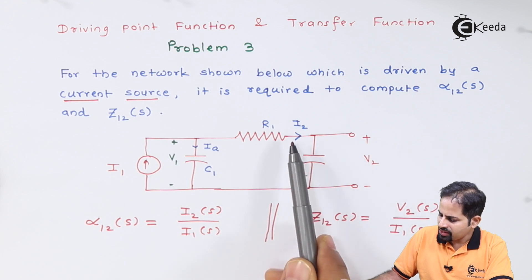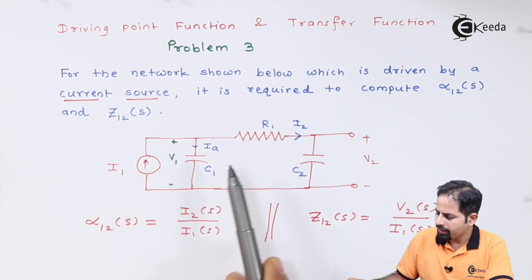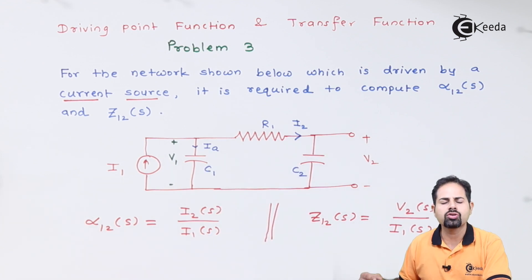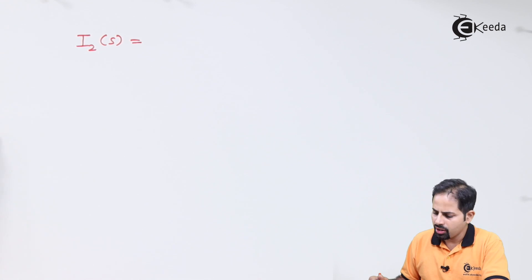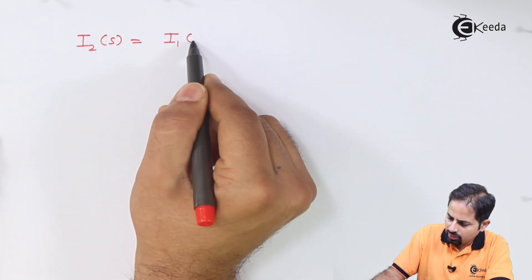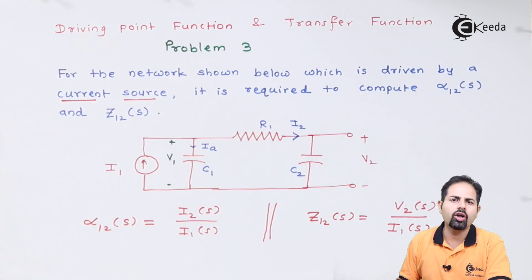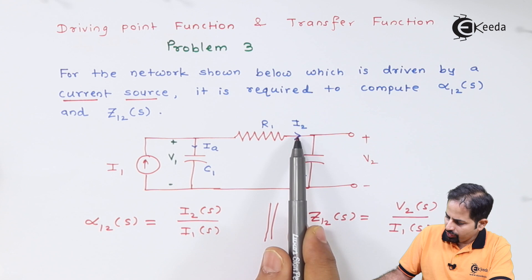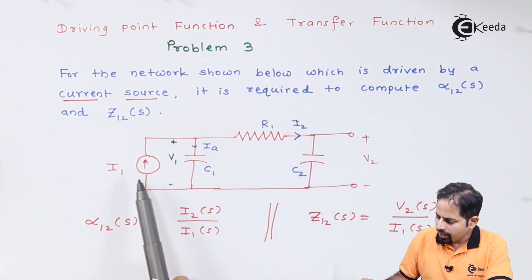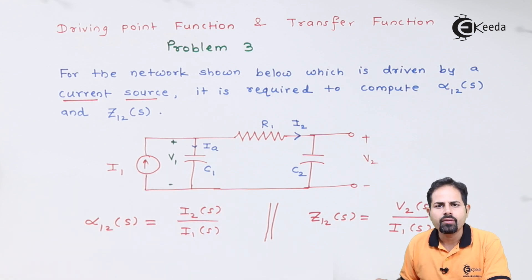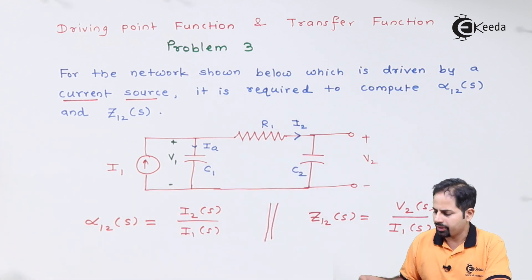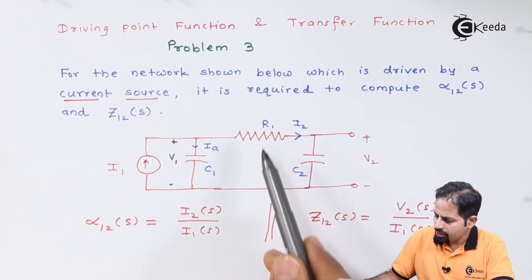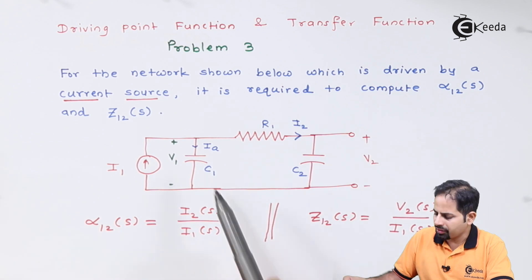Using the current division formula, i2 will be the total current i1 multiplied by some impedance combination. The formula is: i2(s) equals i1(s) times — the impedance which is parallel to the branch of i2 is taken. That impedance parallel to this branch is C1, and the impedance across this capacitor is 1/(C1·s).